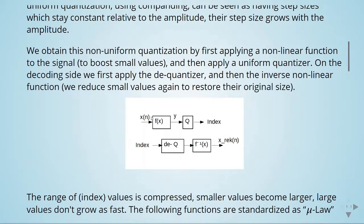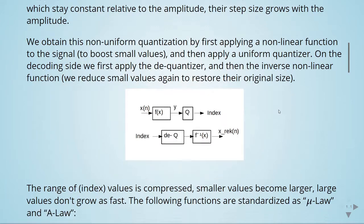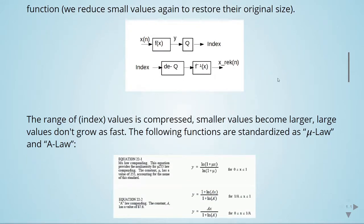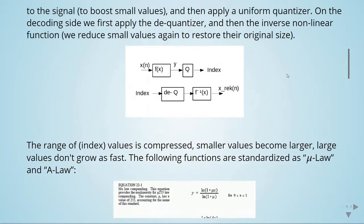Here's the scheme. We have our signal, we apply a non-linear function, then the uniform quantizer. In the decoder, we have this index, then we apply the dequantization, and we have the inverse of the non-linear function, and then we have our reconstructed signal. The range of the values and the range of the index is compressed, and smaller values become larger, and large values don't grow as fast.